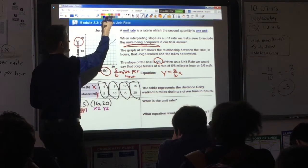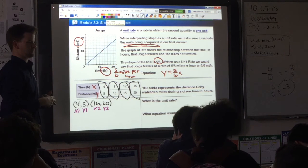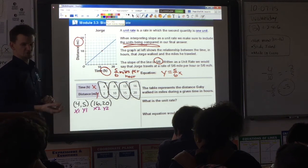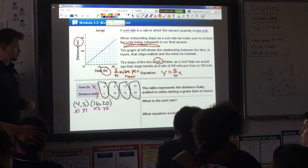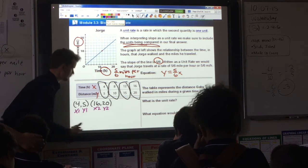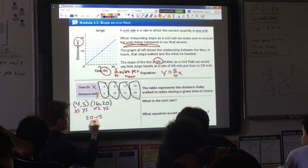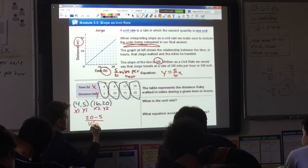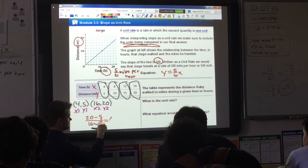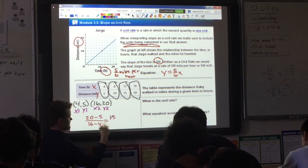Now that we have that identified, we just substitute it into our slope formula, which once again is y2 minus y1 over x2 minus x1. Substitute it in. 20 minus 5 over 16 minus 4. What is 20 minus 5? 15. What is 16 minus 4? 12.